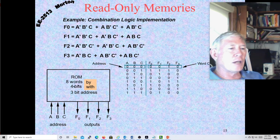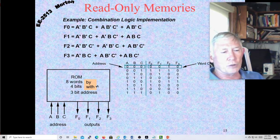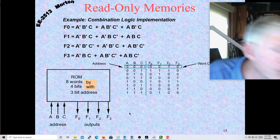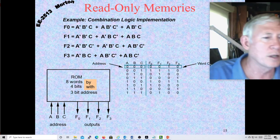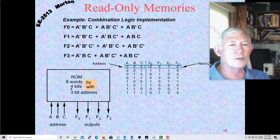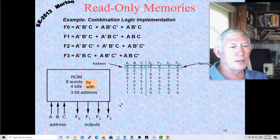Here's an example of a ROM — 8 words by 4 bits with three address lines. Two to the third is eight, so that's why you have eight words with three address lines and four output columns — a four-bit word size. ROMs come in a whole range of different sizes. The big ones usually come in word sizes of one byte or maybe two bytes, and the smaller ones can come in a number of different combinations.